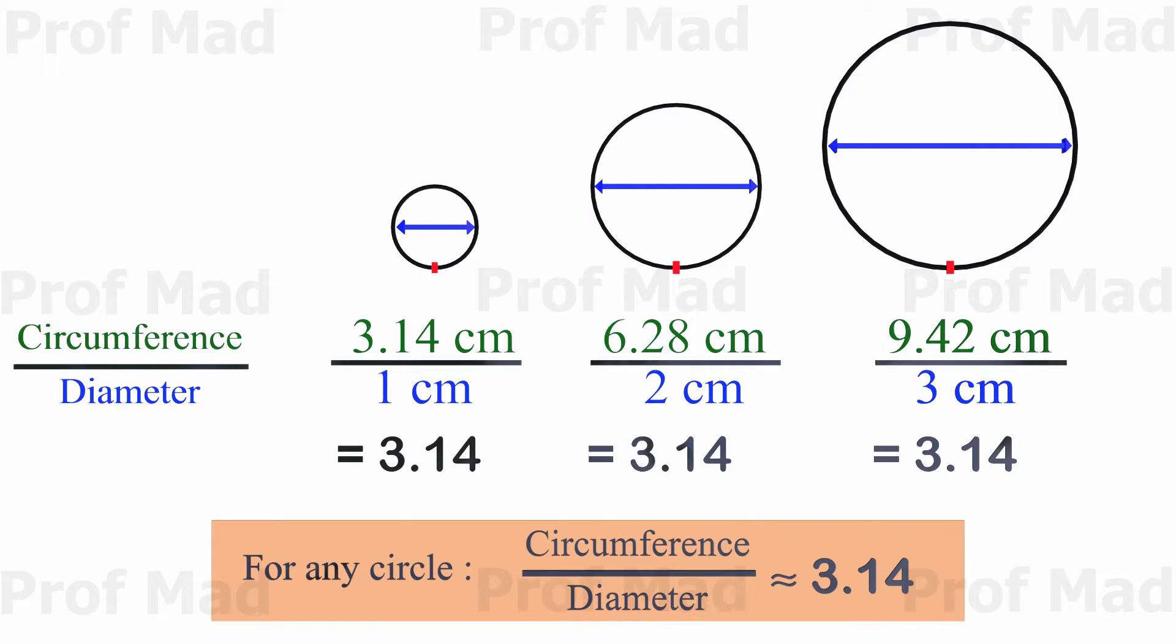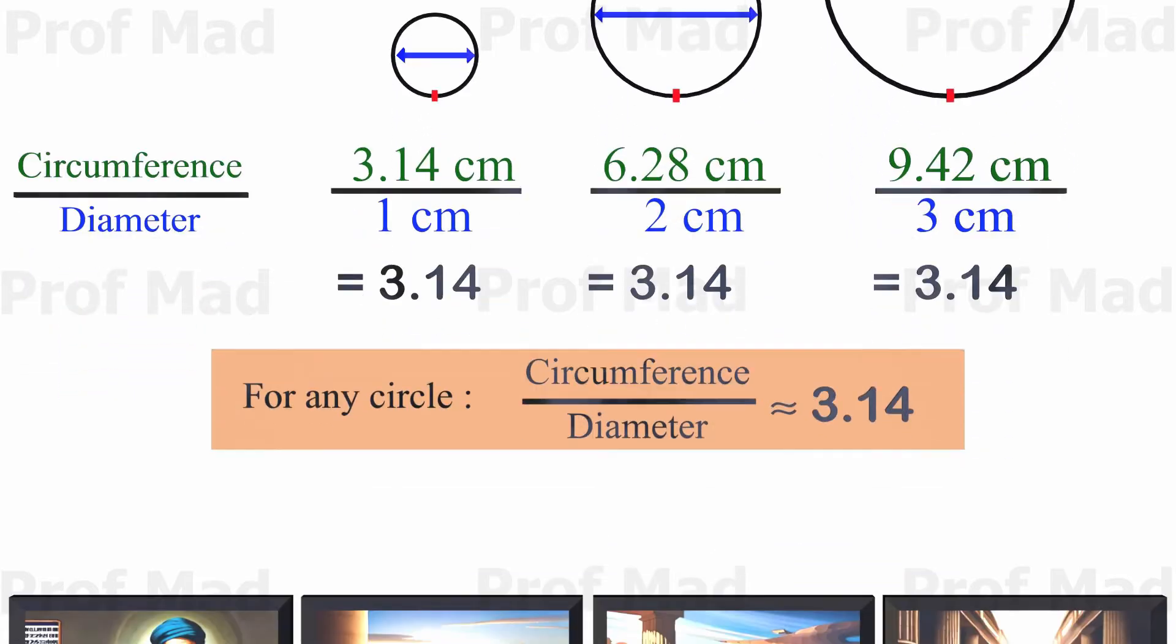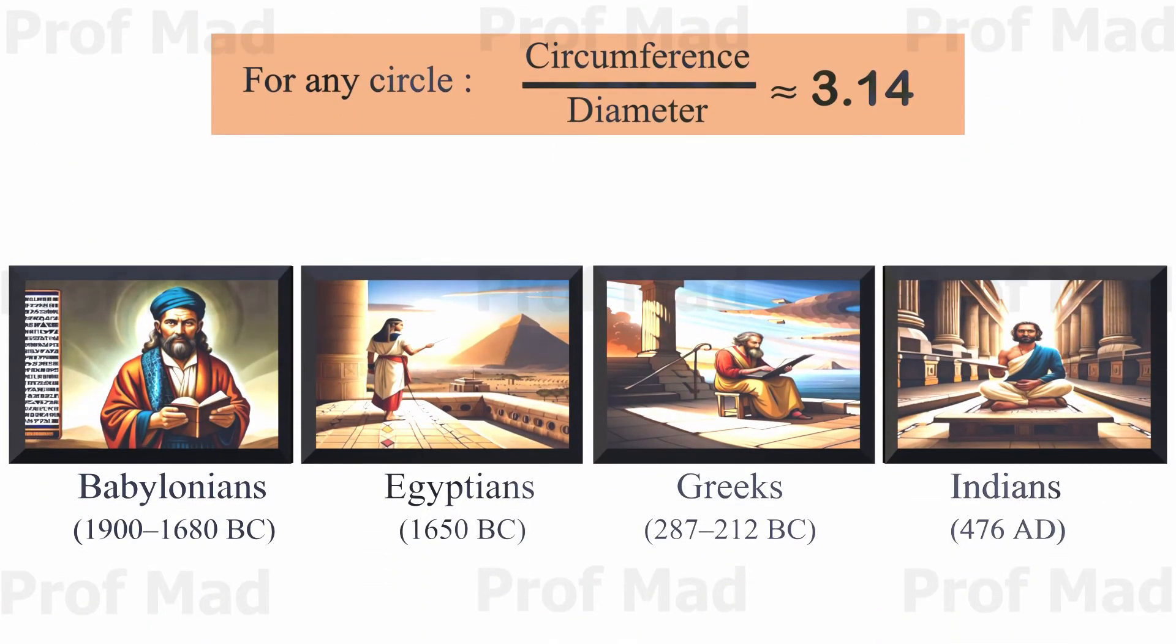This amazing discovery has been known since ancient times. Different civilizations like the Babylonians, Egyptians, Greeks, and Indians independently found approximations for this special ratio, showing their curiosity about circles.